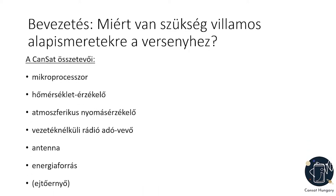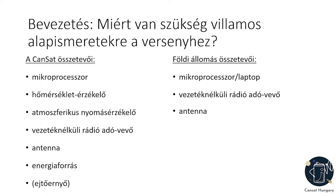Mik is a CanSat összetevői? Egy mikroprocesszor, egy hőmérsékletet érzékelő, egy atmoszferikus nyomás érzékelő, egy vezetéknélküli rádióadóvevő, egy antenna és egy energiaforrás. A földi állomás összetevői: egy mikroprocesszor vagy egy laptop, egy vezetéknélküli rádióadóvevő és egy antenna. Ezek az elemek mind szükségesek a kötelező feladat megvalósításához.